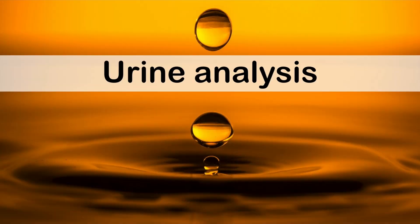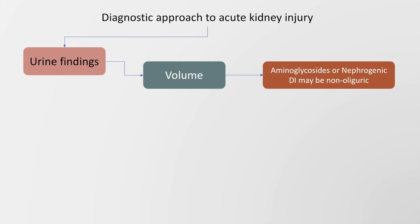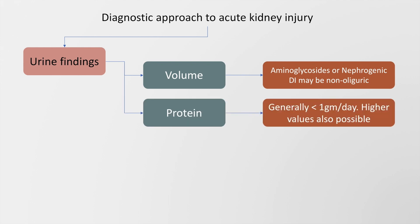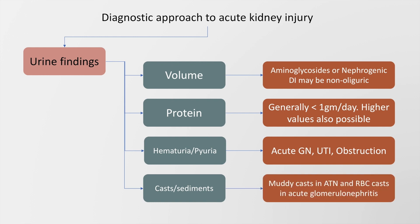Urine analysis is an important part of the evaluation of acute kidney injury. Regarding volume, patients with aminoglycoside toxicity or pre-existing nephrogenic diabetes insipidus may be non-oliguric, so we cannot always diagnose AKI based on volume criteria alone. Protein loss is generally less than 1 gram per day, though higher values are possible. Hematuria and pyuria suggest acute glomerulonephritis, urinary tract infection, and obstruction.